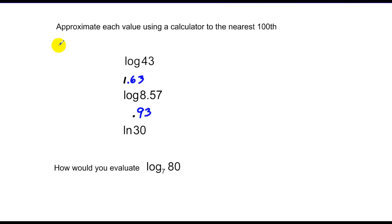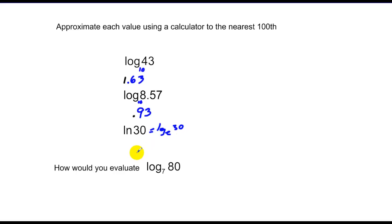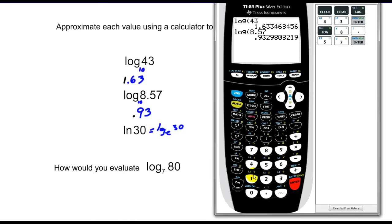These make sense because log of 43 asks what power of 10 is 43 — it's definitely over 1 and less than 2. Log of 8 is not quite 1, because what power of 10 is 10 is 1. The natural log of 30 — which is basically log base e of 30, and e is about 2.7 — should be somewhere between 2 and 4. Using the natural log button on the calculator, the natural log of 30 comes out to 3.4.